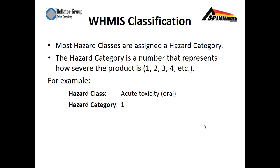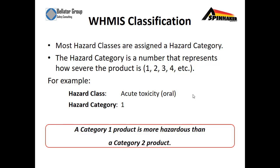Most hazard classes are assigned a hazard category. The hazard category is a number that represents how severe the product is, ranging from one through four or even more. For example, a health hazard of acute toxicity that can be consumed orally would be assigned category one. A category one product is more hazardous than a category two product.